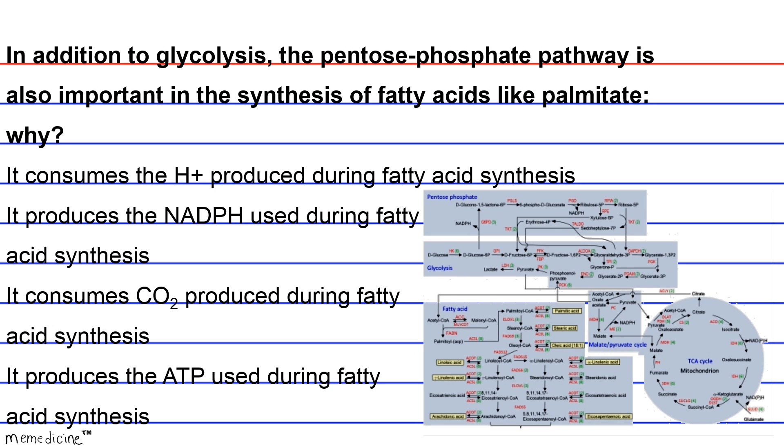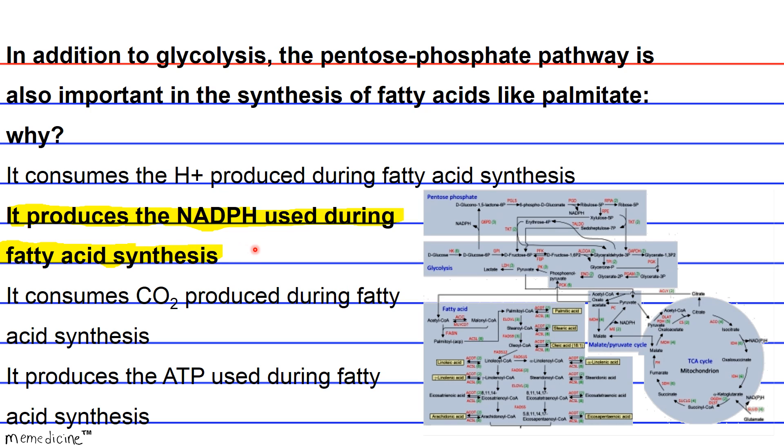So the pentose phosphate pathway uses the glucose 6-phosphate to generate ribulose 5-phosphate and NADPH. Fatty acid synthesis is basically a reductive process that requires the use of NADPH, although it might not be so clear to you here. So the pentose phosphate pathway produces the NADPH used during fatty acid synthesis.